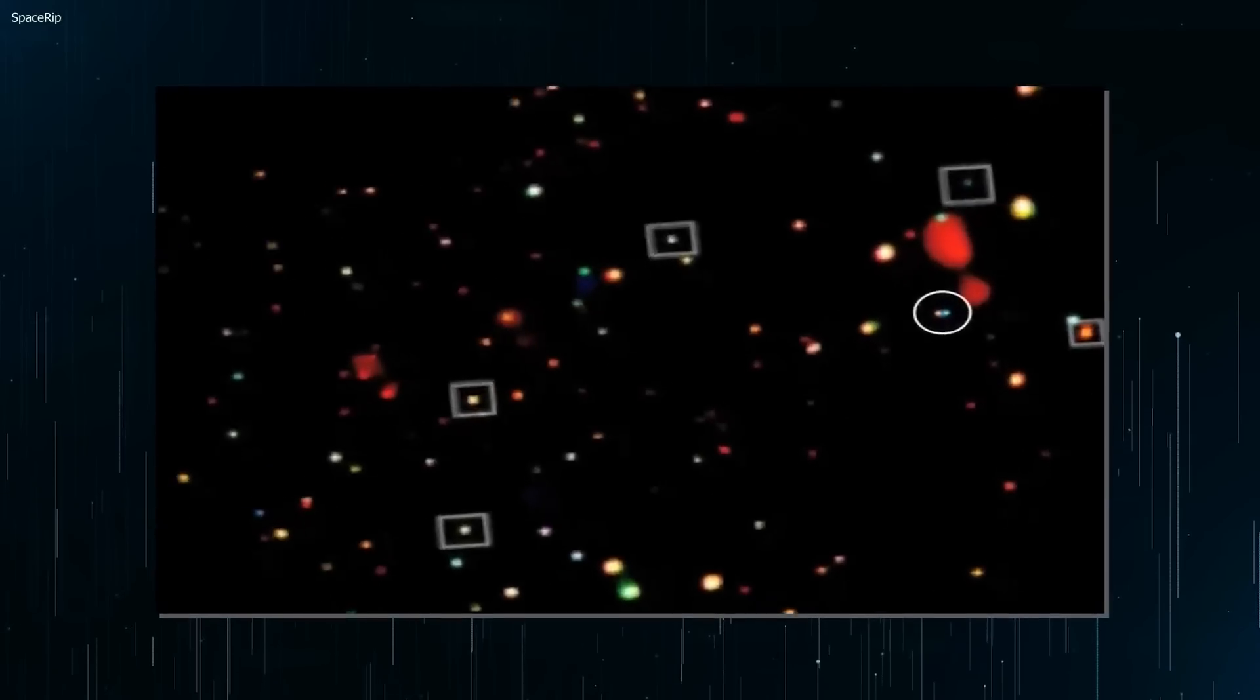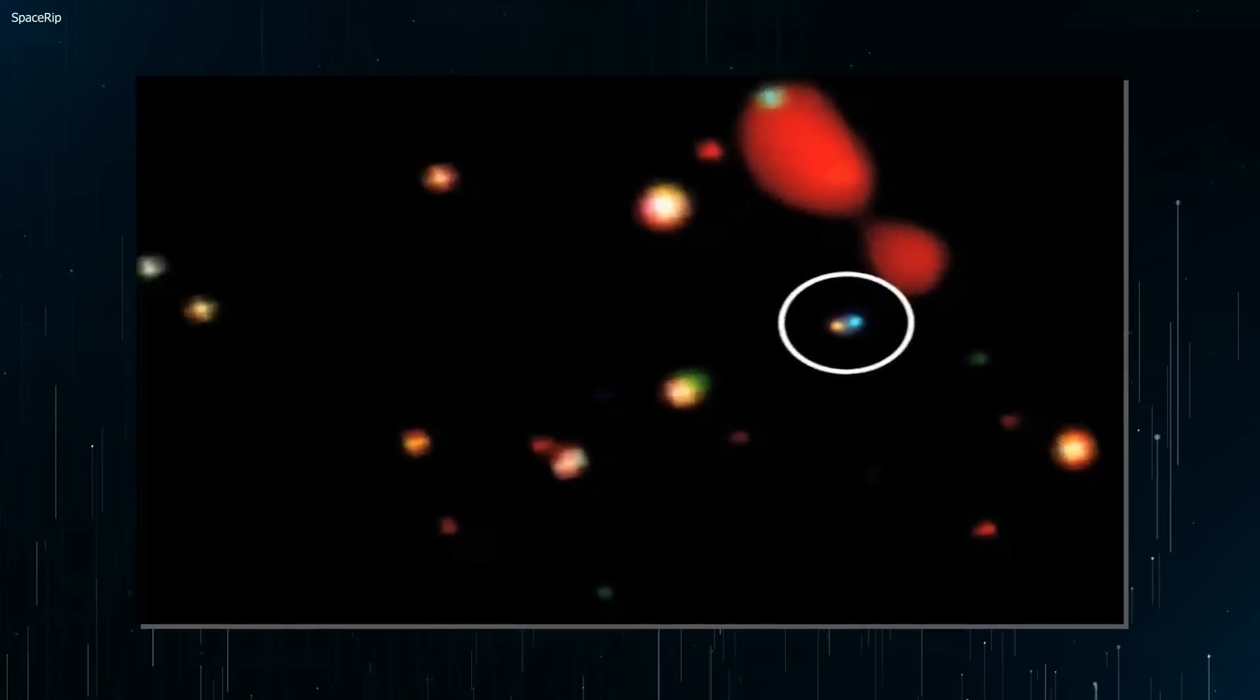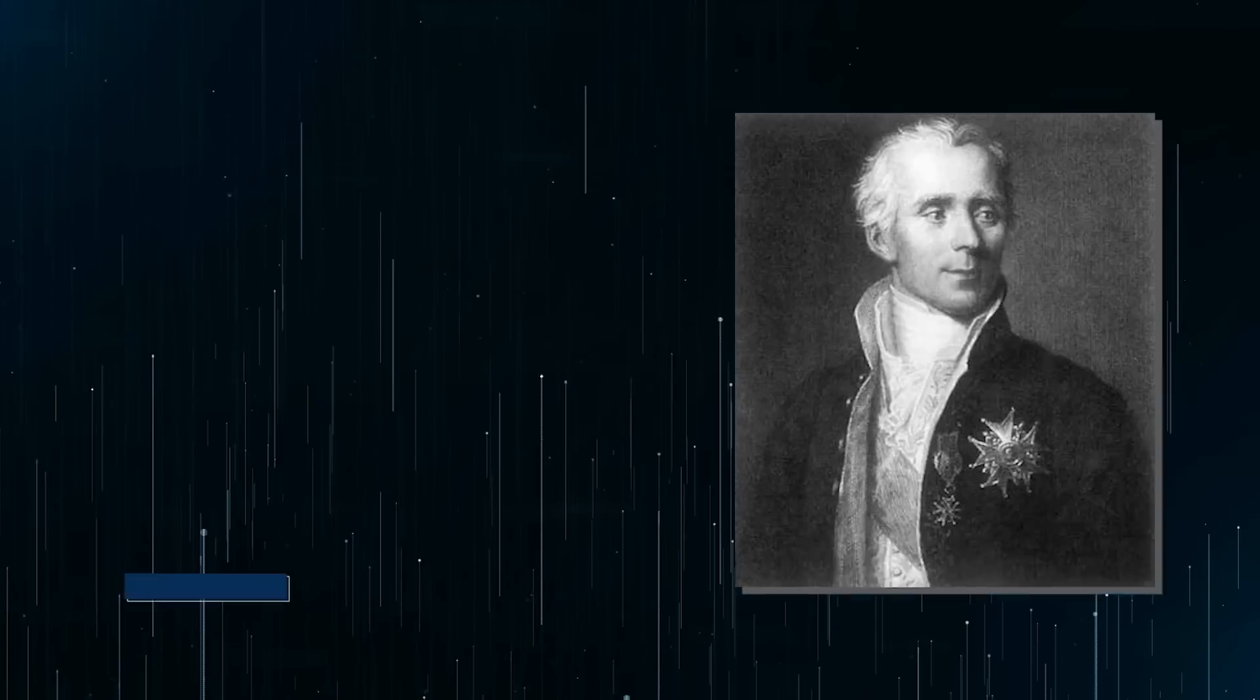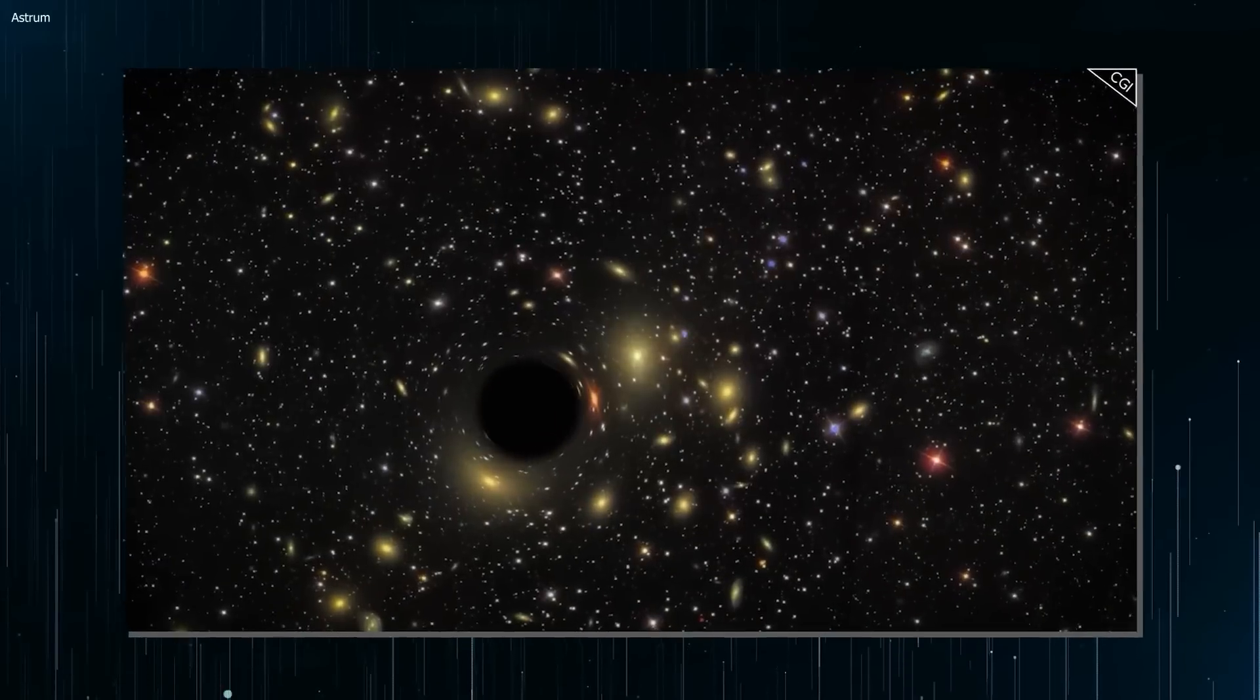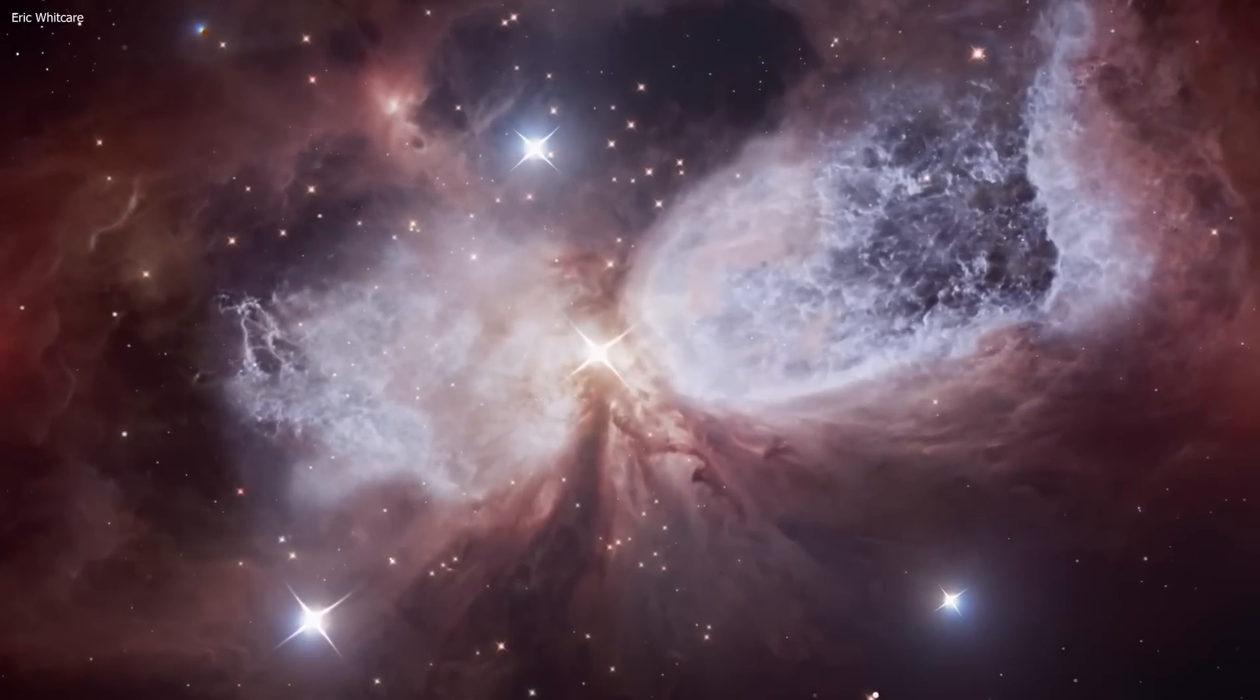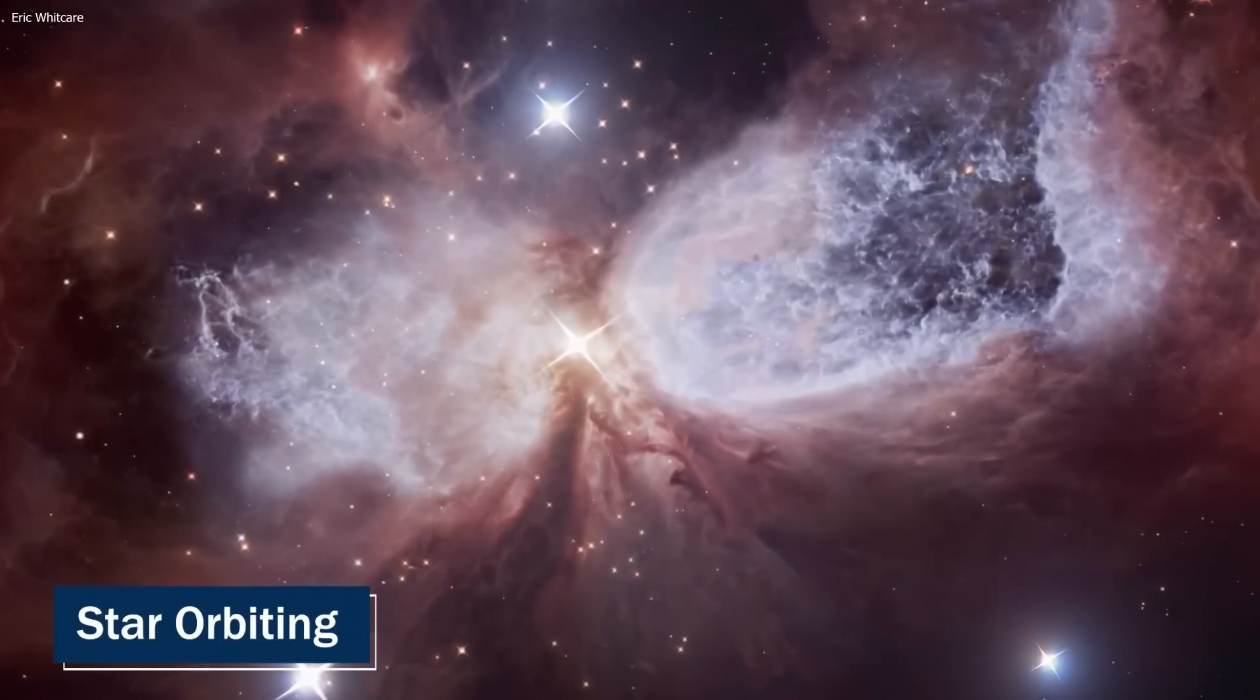The mystery behind black holes began with the English natural philosopher John Michel in 1783, who first suggested their existence. He theorized that despite being invisible, these intense gravity fields might be detected if they had a star orbiting them.